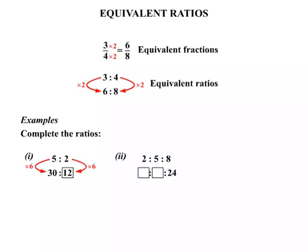Example 2. We have 2 to 5 to 8, and it equals some ratio where there are two numbers missing. We know though that part of it is 24, and that 24 matches up with the 8. So to get from 8 to 24, we need to times by 3. We just make sure that we times each of the other numbers by 3 as well. So firstly the 2: 2 times 3 gives us 6. And the number in the middle, the 5 — times that by 3 and we get 15.